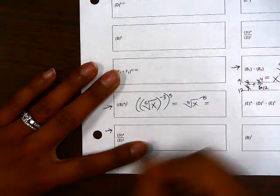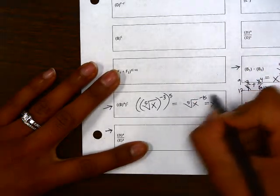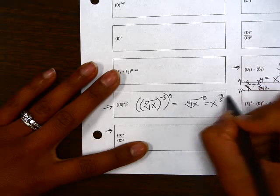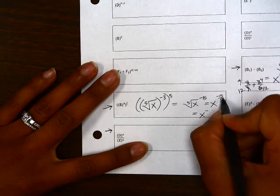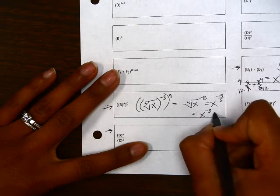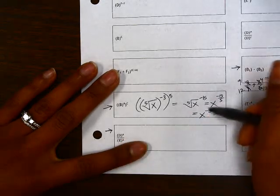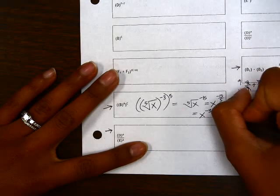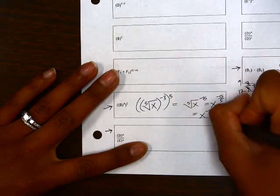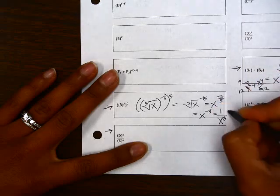To completely simplify this, I'm going to change this to a fractional exponent, negative 15 over 5. That gives me x to the negative 3. We don't want to leave our answer with a negative exponent. So with a negative exponent, we can do the reciprocal of the expression and change it to a positive 3.